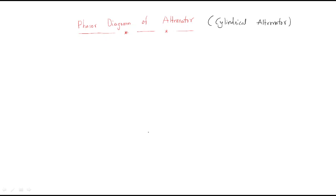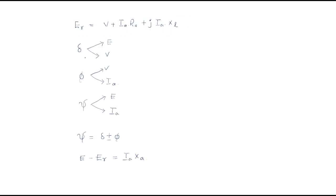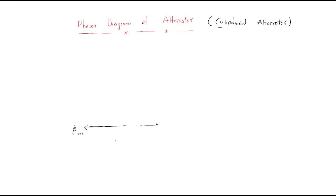The first thing you have to draw is the main field flux vector. This is the main field flux vector, represented as phi-m. Here phi-m is the main field flux.